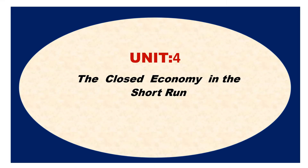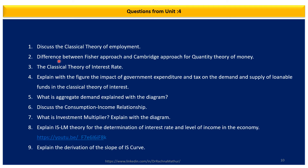From unit four — the closed economy in the short run — prepare the classical theory of employment, the difference between the Fisher approach and the Cambridge approach to the quantity theory of money (very important), the classical theory of interest (very important), the impact of government expenditure and tax on the demand and supply of loanable funds in the classical theory of interest, what is aggregate demand explained with a diagram, what is the consumption-income relationship, and what do you understand by the investment multiplier.